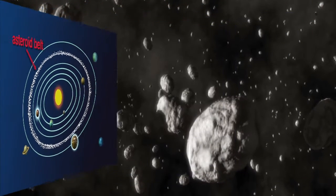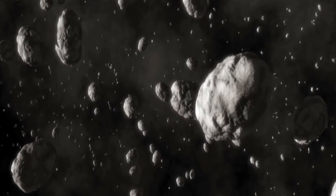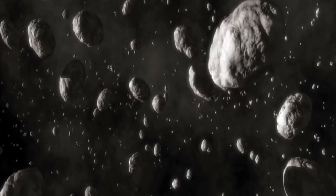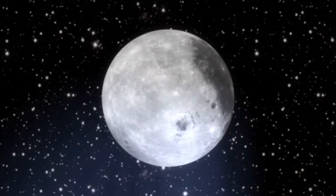The asteroid belt probably contains millions of asteroids. We have yet to identify them all. However, if they were all squashed into one planet, it would be smaller than our moon.